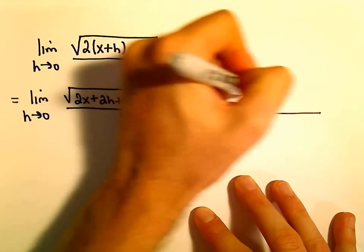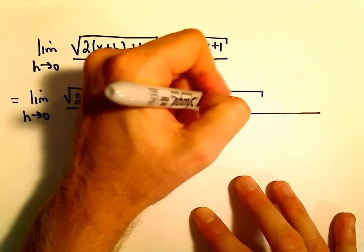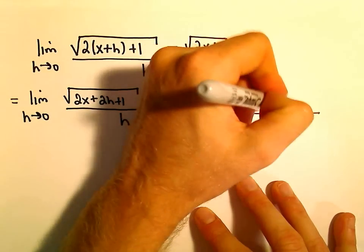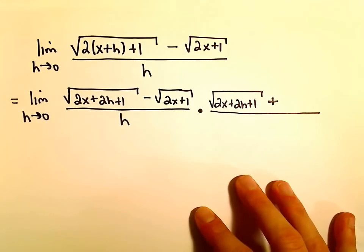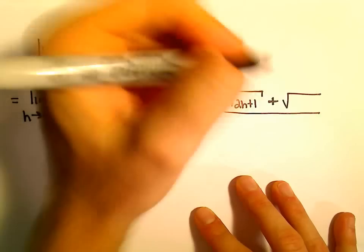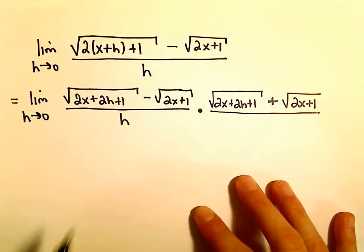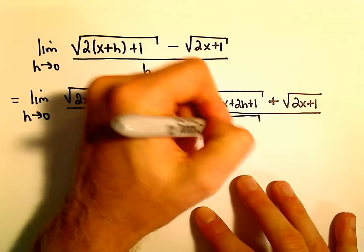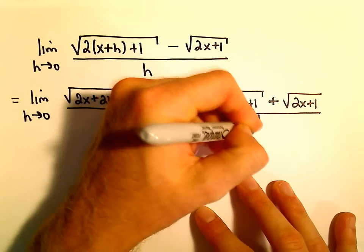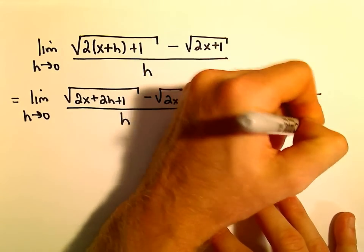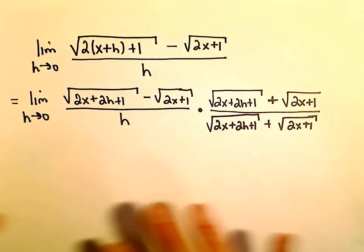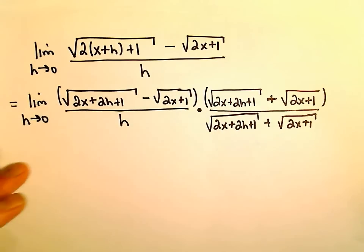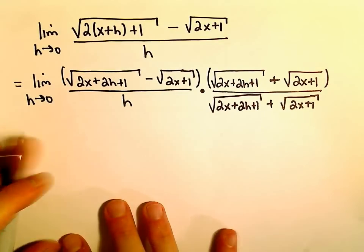So we basically leave everything underneath the square roots just like it was — the square root of 2x plus 2h plus 1. We change our minus sign to a plus sign, and then multiply again by just the square root of 2x plus 1. Since we multiplied the numerator, we also have to multiply the denominator by the same thing. I'm going to stick parentheses around some of the stuff in the numerator just to remind myself to distribute here.